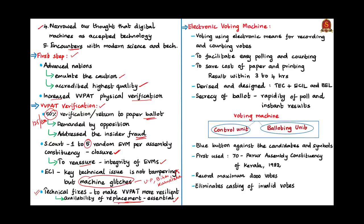The Electronic Voting Machine is a device for recording and counting votes, developed to facilitate easy polling and counting. Its use saves cost of paper and printing and allows results within 3 to 4 hours, saving a lot of manual exercise involved in conventional counting. EVMs have been devised and designed by the Technical Experts Committee of the Election Commission in collaboration with two public sector undertakings — Electronics Corporation of India Limited and Bharat Electronics Corporation of India Limited. These machines provide full safeguard for ensuring secrecy of ballot, against tampering, and ensure rapidity of poll and instantaneous results. A voting machine consists of two units — a control unit and a balloting unit — joined by a 5-meter cable.